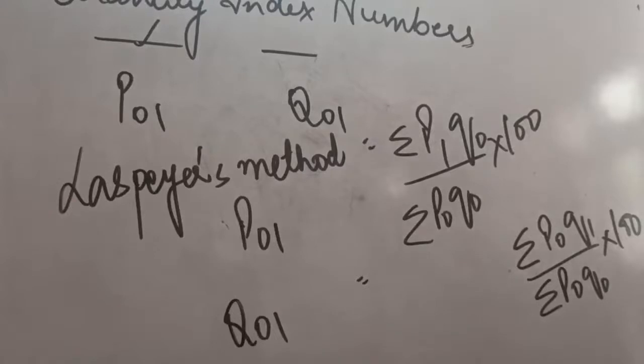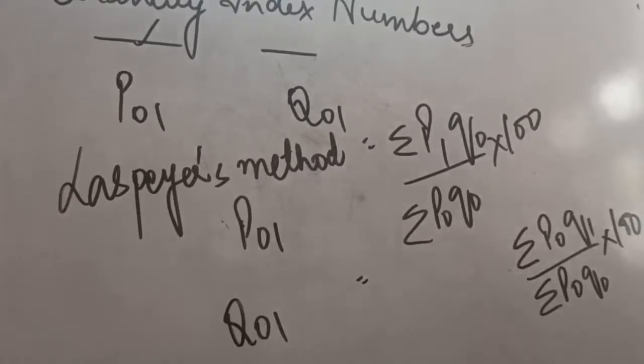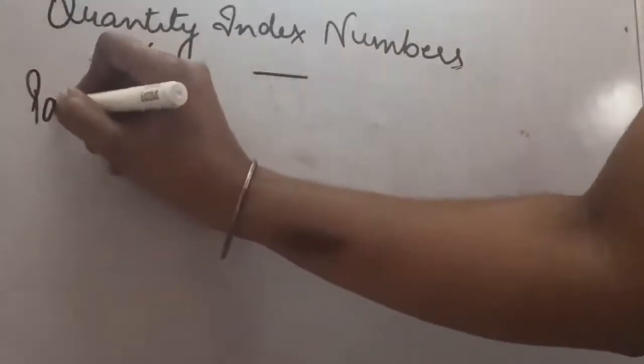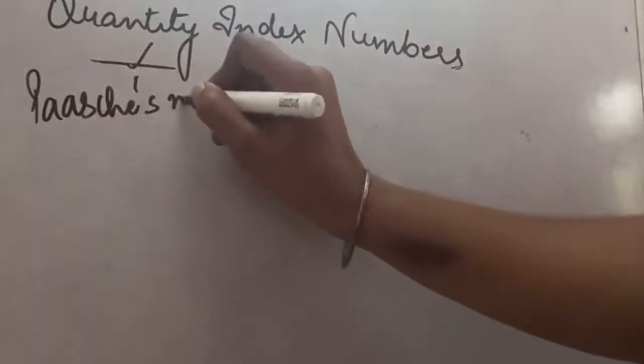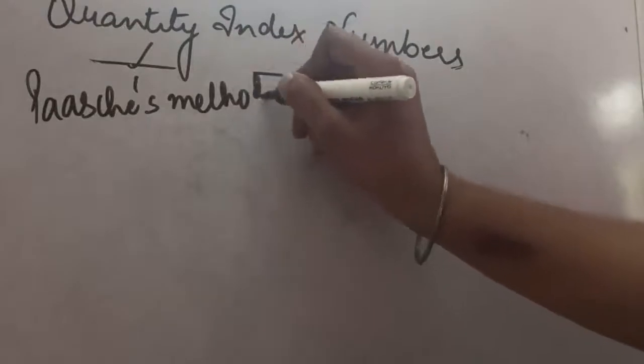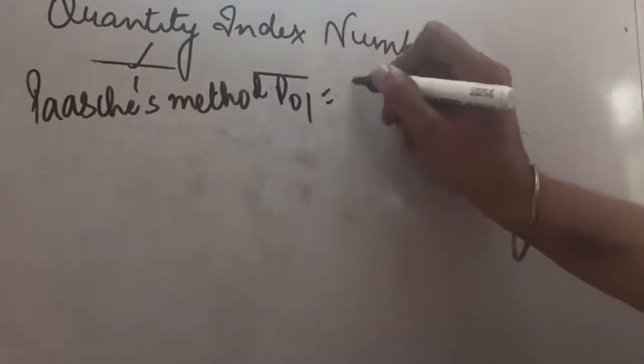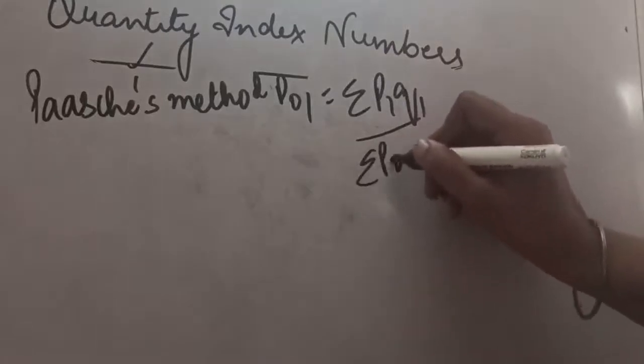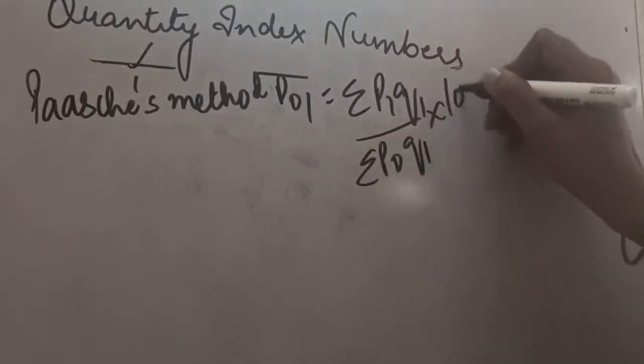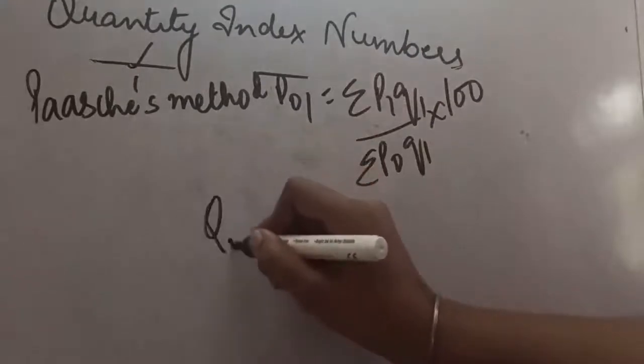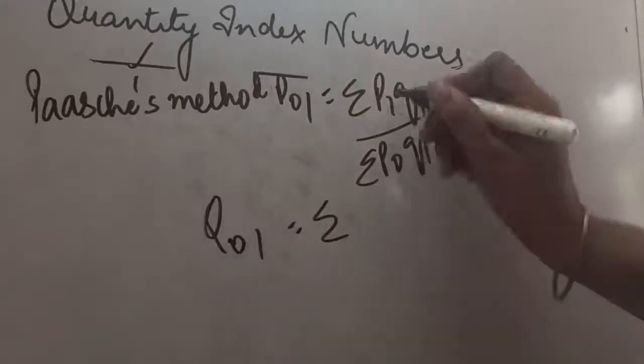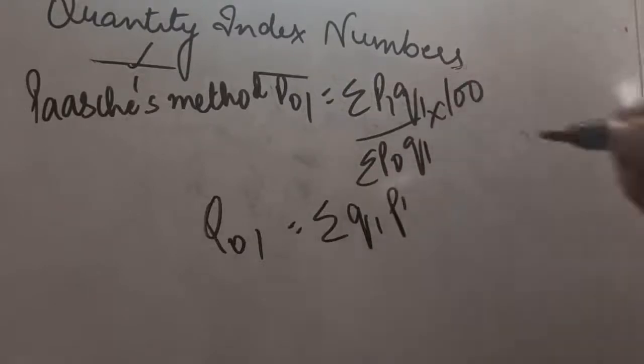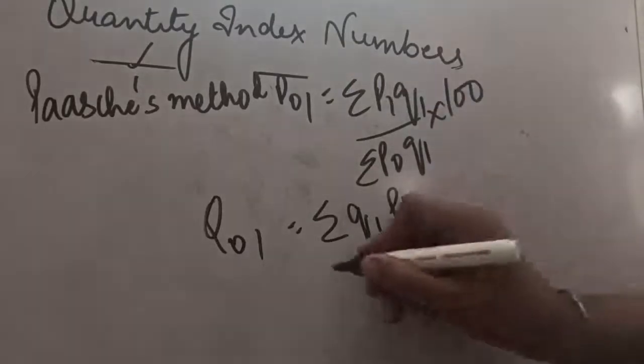Similarly, we can make changes to all the other formulas. Let us see the Paasche formula. You have seen that the Paasche formula for Price Index was this. Now, if I have to write Quantity Index from here, what will I do? I will be replacing Q at the place of P and P at the place of Q. So, Q and P divided by, here Q will come, here P will come.